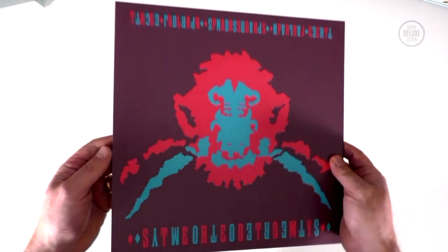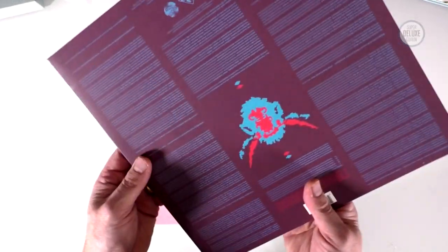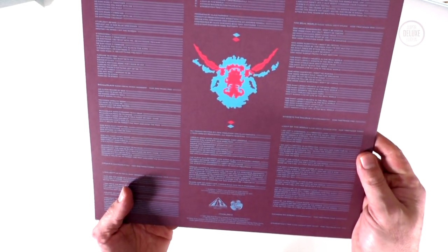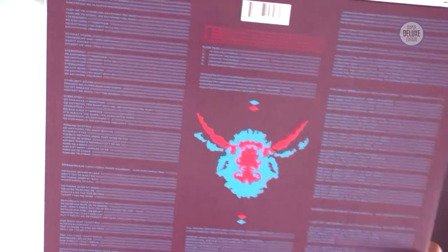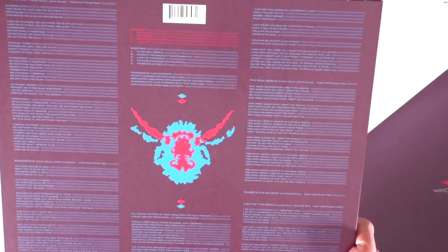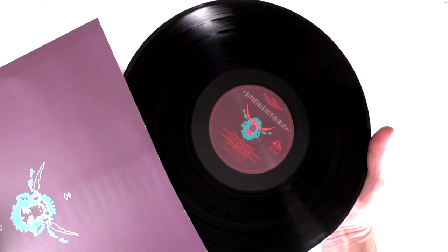And this is Stereotomy from 1985 as well actually. Two albums in 1985. Confusing typography and sleeve design. It's not that easy to read actually, the blue on the sort of purple colour. Another printed inner. And there's the black vinyl.